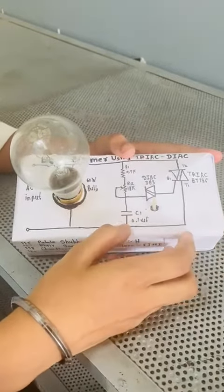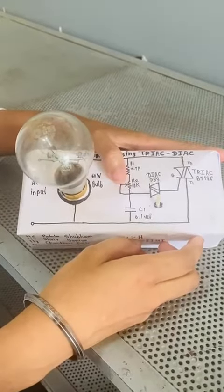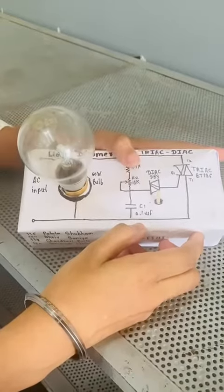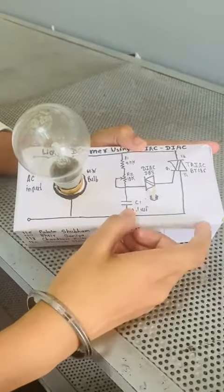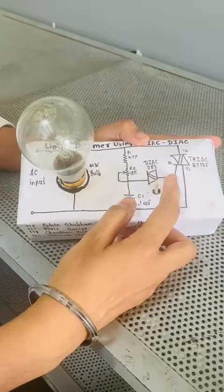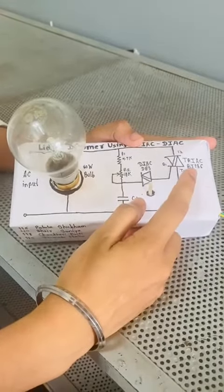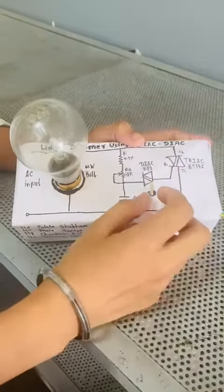The charging and discharging time of the capacitor depends on the value of the potentiometer. As we vary the potentiometer, the charging and discharging time of the capacitor changes. As the capacitor is fully charged, the DIAC is turned on and the output of the DIAC is given to the gate terminal of the TRIAC which triggers the TRIAC.